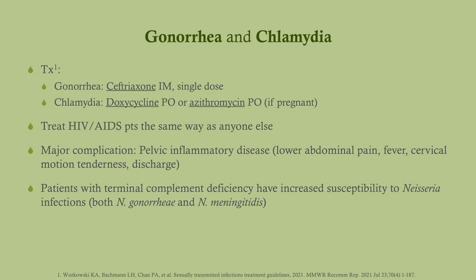Remember the major complication, particularly of gonorrhea and chlamydia, is pelvic inflammatory disease. Also worth remembering, especially for Step 1, is that terminal complement deficiency is associated with an increased risk of Neisseria infections, because complements seven through nine form the membrane attack complex, which is really useful for fighting off Neisseria. This applies to Neisseria meningitidis — why we give the meningococcal vaccine — and also to Neisseria gonorrhea, putting these patients at risk for gonococcal infections.